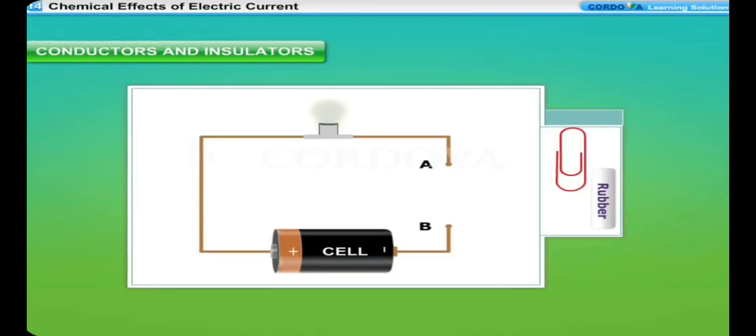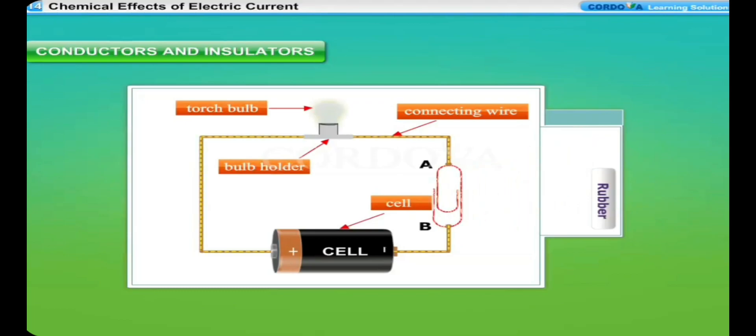Conductors and insulators. Electricity, or electric current, flows when there is a source of current, like a dry cell or battery, and a closed path or circuit. Materials that allow electricity to flow through them easily are called conductors. All the metals are good conductors of electricity. Graphite is the only non-metal which is a good conductor of electricity.